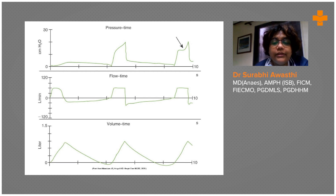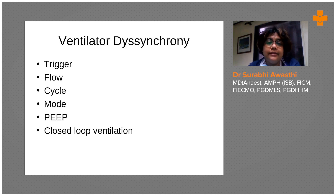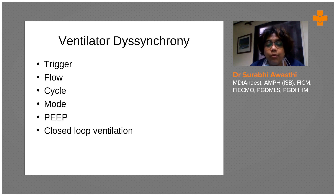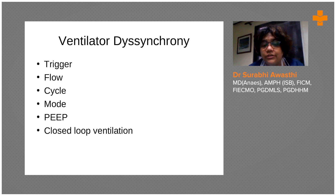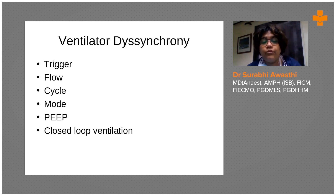Ventilator dyssynchrony means the ventilator is moving at its own pace and the patient is moving at their own pace - they are not working together. Whatever the patient's requirement or ventilatory effort is, the ventilator is not cooperating. Problems causing this include an incorrect trigger setting, incorrect flow, an inappropriate mode for the patient - such as putting an awake and fighting patient on a control mode - or the PEEP being too high or too low, or use of closed-loop ventilation.